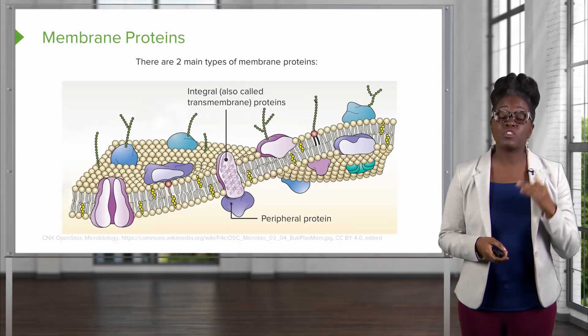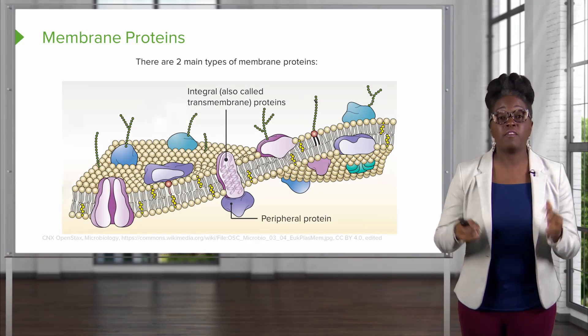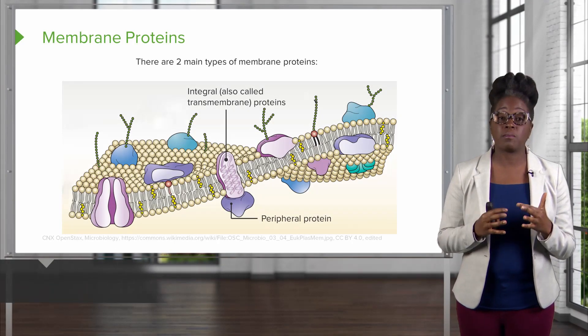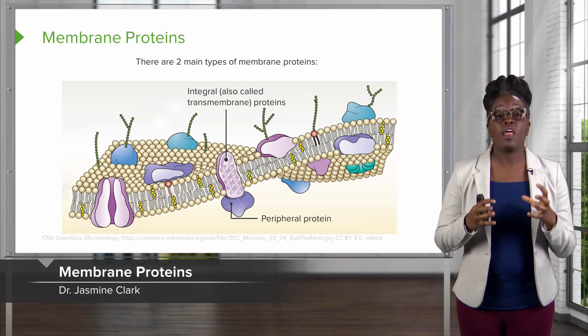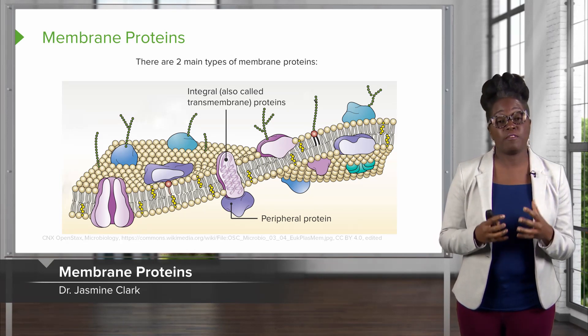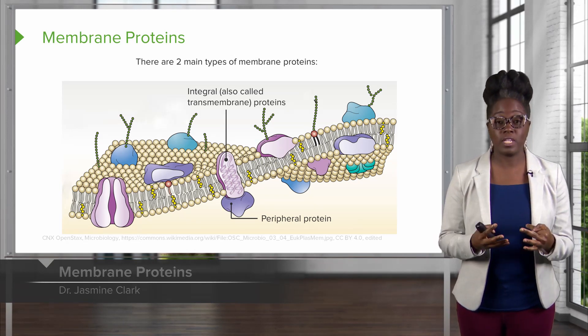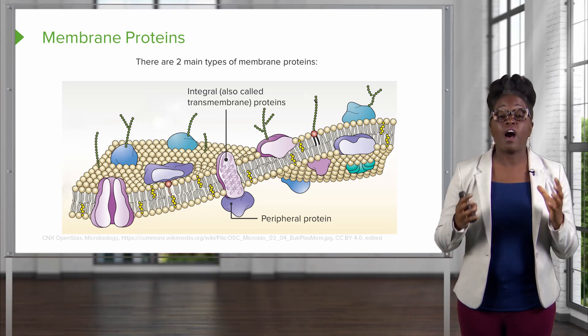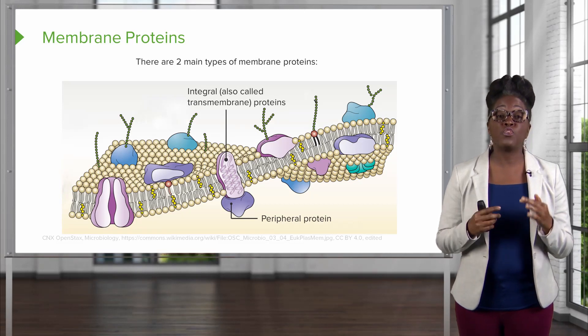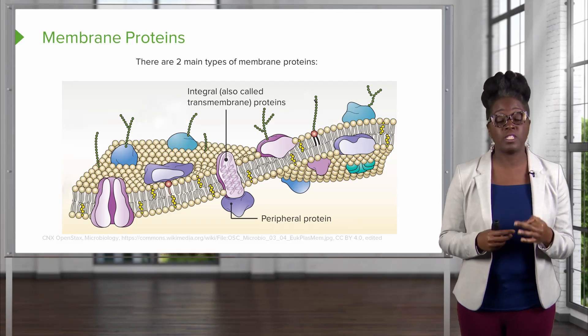Speaking of some of the things found in the plasma membrane, it has many different types of proteins. Of the different types of proteins, there are two main types.